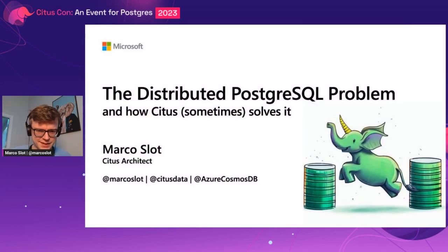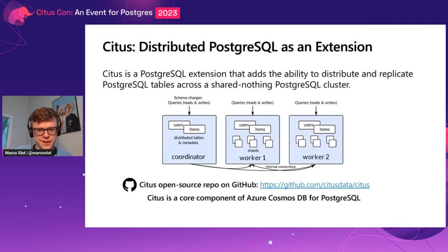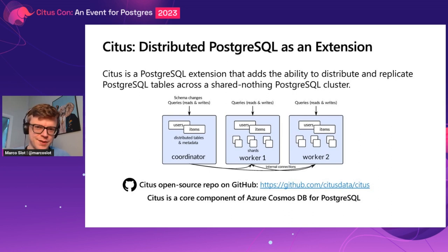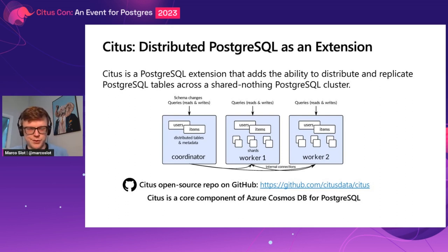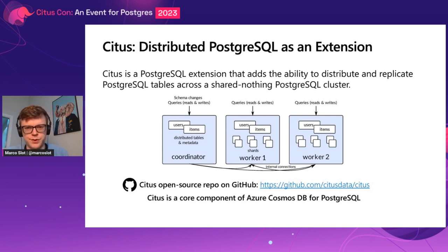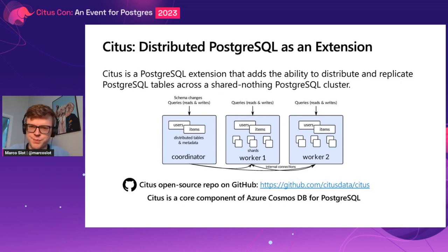So, you're probably familiar with Citus as a project because it's the namesake of this conference. Basically it's a distributed Postgres implementation that's built as an extension on top of Postgres. It gives you the ability to distribute and replicate Postgres tables across a cluster of PostgreSQL servers. You can connect to any of the nodes and you'll see that same set of tables, and under the covers they will be sharded across all the nodes. Queries that you do on the distributed tables will be routed or parallelized across the cluster. And it's open source — you can get it from GitHub, packages, Docker images, source code, however you want to consume it.